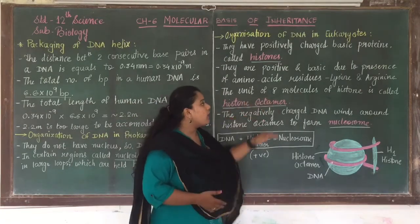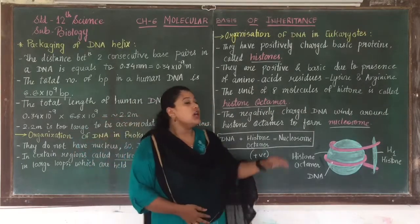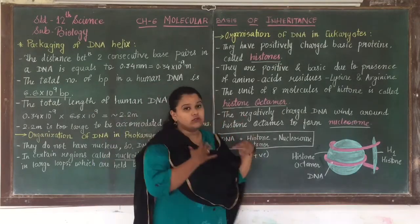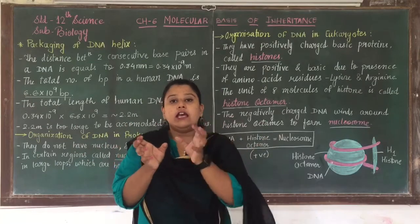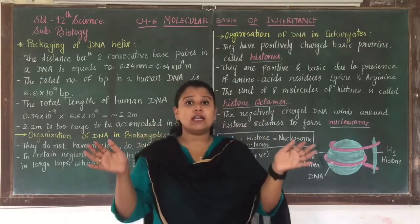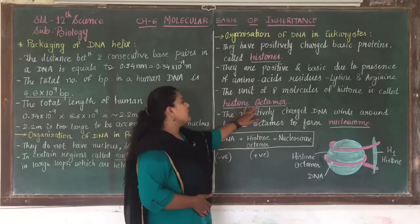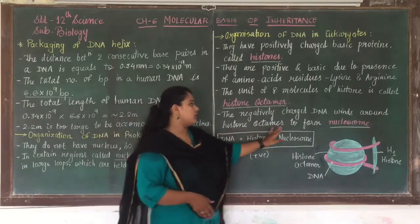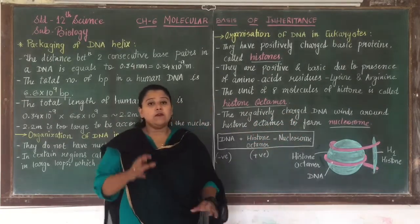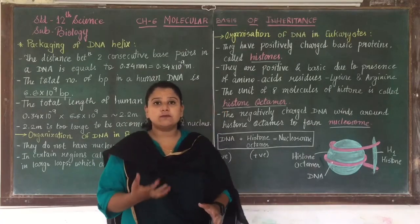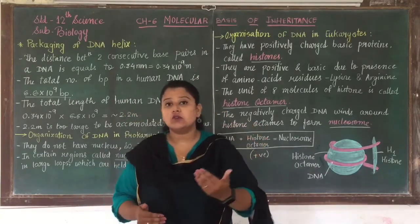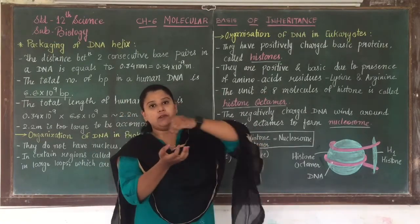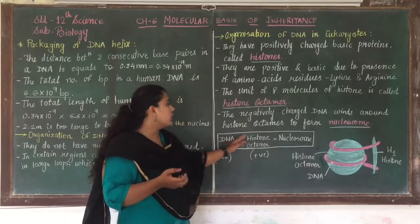The unit of eight molecules of histone is called a histone octamer. When eight different histone molecules combine with each other, they form a histone octamer. The negatively charged DNA then winds around the histone octamer to form a nucleosome. So when DNA is wrapped around the histone octamer, what is formed is a nucleosome.